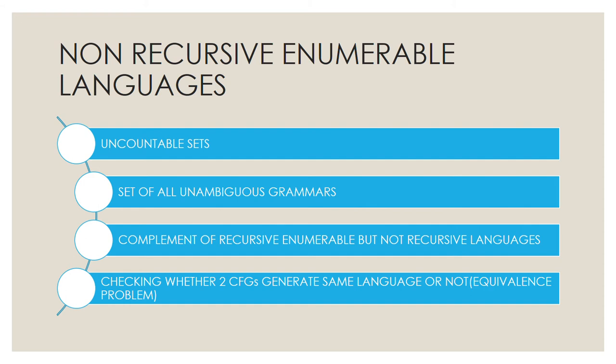Now heading towards non-recursively enumerable (non-RE) languages. These include uncountable sets discussed in the previous video, and the set of all unambiguous grammars. Importantly, the complement of an RE but not recursive language is a non-RE language. Note that the complement of a recursive language is still recursive, but the complement of an RE but not recursive language is non-RE.